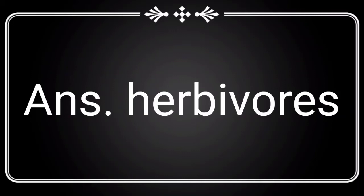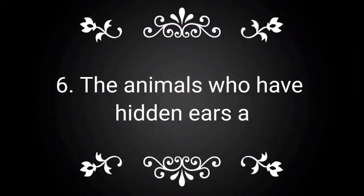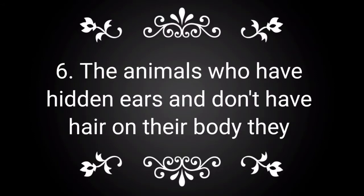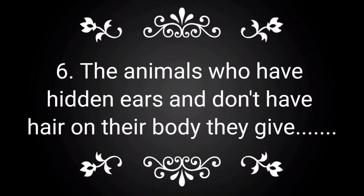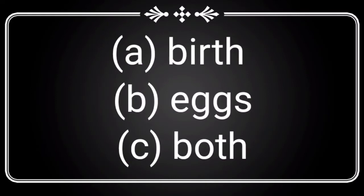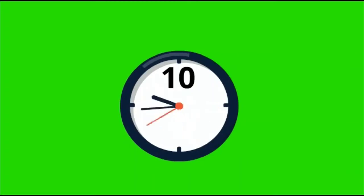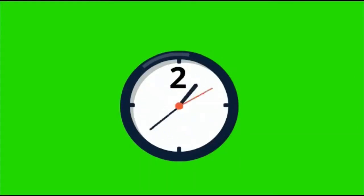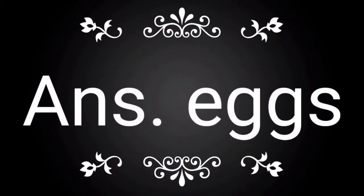Question number 6: The animals who have hidden ears and don't have hair on their body — they give dash. You have three options — Option A: birth, Option B: eggs, Option C: both. Think the correct answer within 10 seconds. The correct answer for this question is eggs.